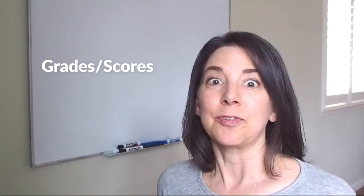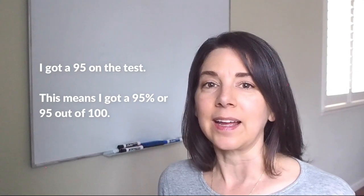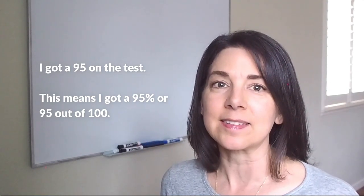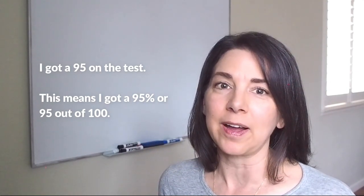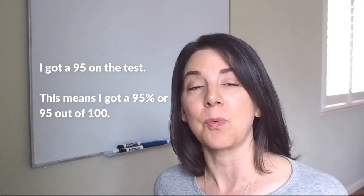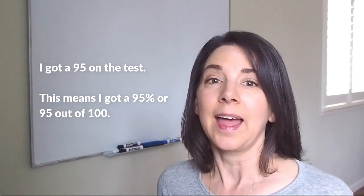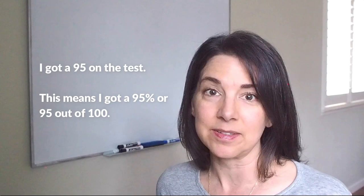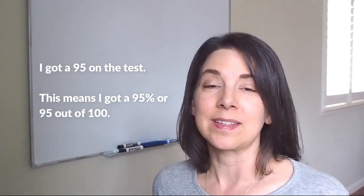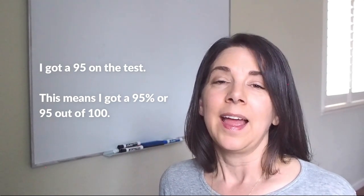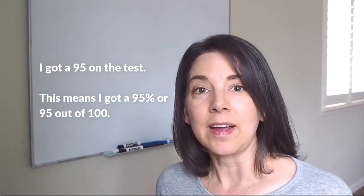Finally, we use numbers to talk about grades or scores in school, and we often use it as a percent out of 100. So for example, you can say 'I got a 95 on the test,' and that means that I got 95 points out of a total of 100 possible points, and that's a 95 percent. So in the US, a 95 is an A. And again, we say 'I got a 95 on the test,' or 'I got a 90,' or 'I got an 85.'